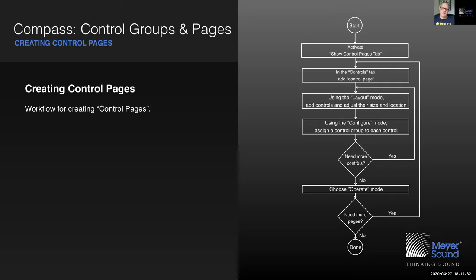If you need more controls, go back and add more. If you want separate control pages — for example, a venue with multiple rooms each with its own dedicated control page — go back to the top of the flowchart and add more user-defined pages. That is the process in a nutshell.